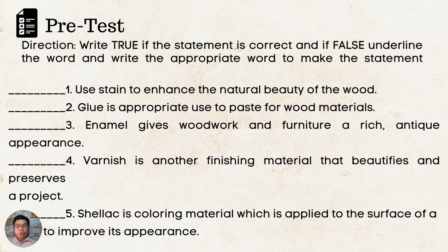1. Use stain to enhance the natural beauty of the wood. 2. Glue is appropriate to use to paste for wood materials. 3. Enamel gives woodwork and furniture a rich, antique appearance. 4. Varnish is another finishing material that beautifies and preserves a project. 5. Shellac is a coloring material which is applied to the surface of a wood to improve its appearance.